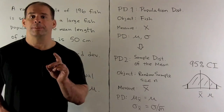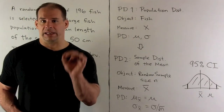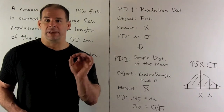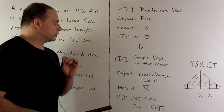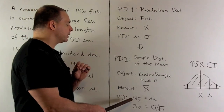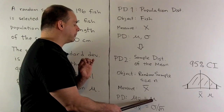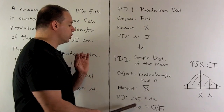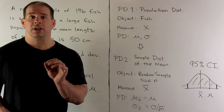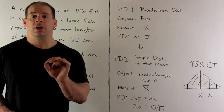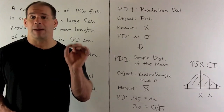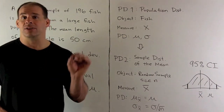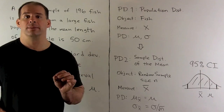This sampling distribution has a mean and a standard deviation. The mean for our new distribution is going to be the same as the population mean. The new standard deviation is going to be the population standard deviation divided by the square root of the sample size.